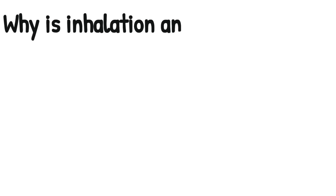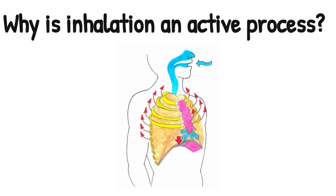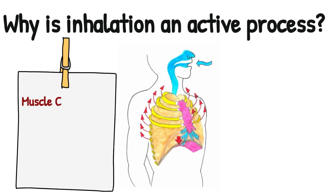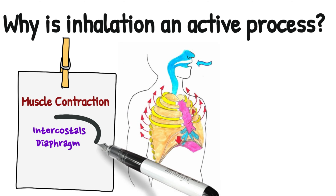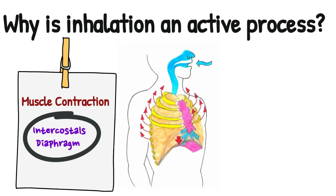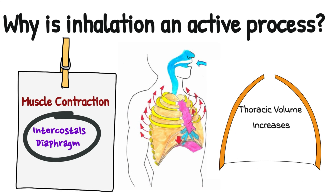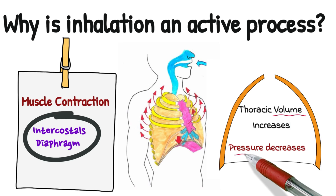Why is inhalation an active process? It's active because it involves muscle contraction. The intercostal muscles and the diaphragm will contract, and when these muscles contract, it makes the thoracic cavity increase in volume and the pressure reduces — a decrease in pressure in the lungs also. You must mention volume and pressure in your answers related to inhalation and exhalation; that's really important.